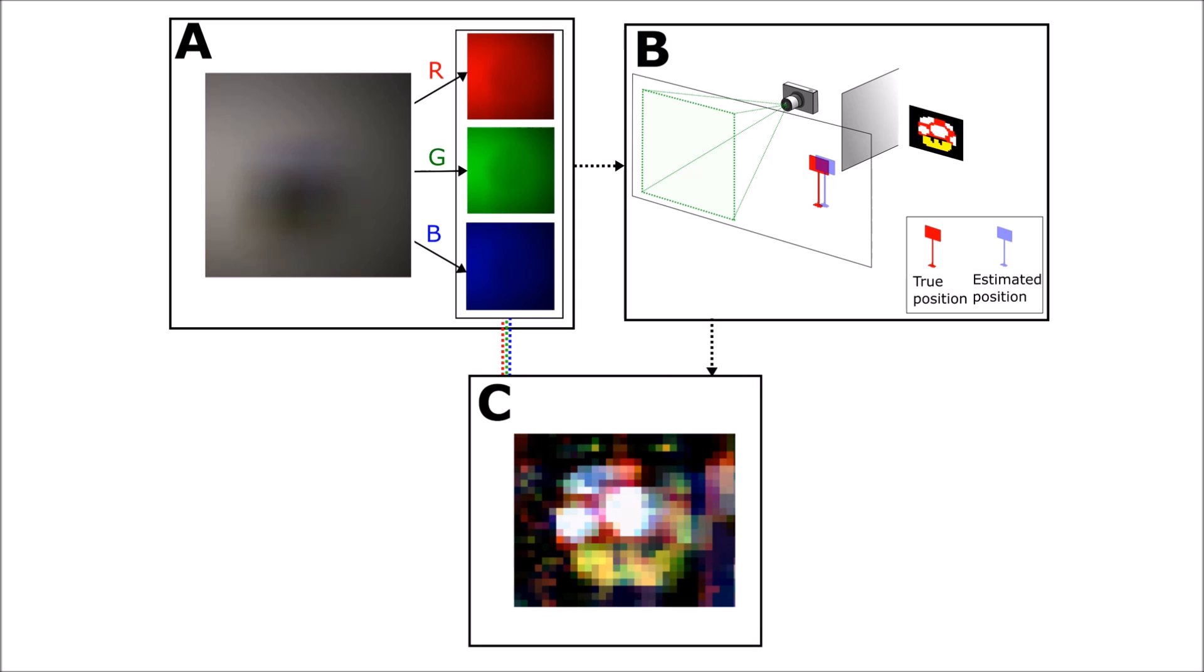We use the estimated occluder position to simulate the forward transport matrix. We then take differences along the columns of the measurement image to reject slowly varying and close to constant background contributions, before solving a total variation regularised inverse problem to form the final reconstruction.